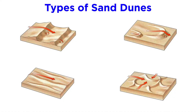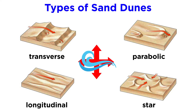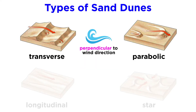Sand dunes come in four main types: transverse, parabolic, longitudinal, and star. The type of sand dune that forms is dependent upon the wind direction. Transverse and parabolic dunes are similar to ripples in that they form perpendicular to the prevailing wind direction, which mostly blows in one primary direction. The difference between the two is that transverse dunes have straight crests, and parabolic dunes have parabolic or curved crests.